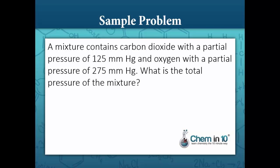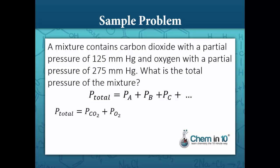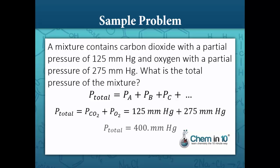A mixture contains carbon dioxide with a partial pressure of 125 mmHg and oxygen with a partial pressure of 275 mmHg. What is the total pressure of the mixture? Dalton's Law says the total pressure equals the sum of the partial pressures, so total pressure equals the pressure of CO₂ plus the pressure of O₂: 125 mmHg plus 275 mmHg equals 400 mmHg.